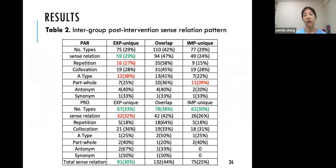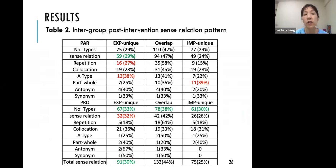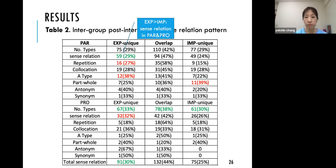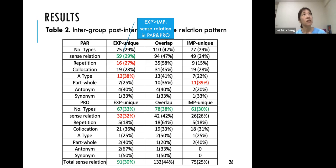I also compared intergroup post-intervention sense relation patterns — how they connect meanings across modes. The Venn diagram overlap shows common ground. The experimental group has unique types compared to the implicit control group. There is a higher sense relation percentage, combining participant and process types, for the experimental group — meaning they tended to show a higher percentage of complementarity when interpreting visuals and writing their responses.